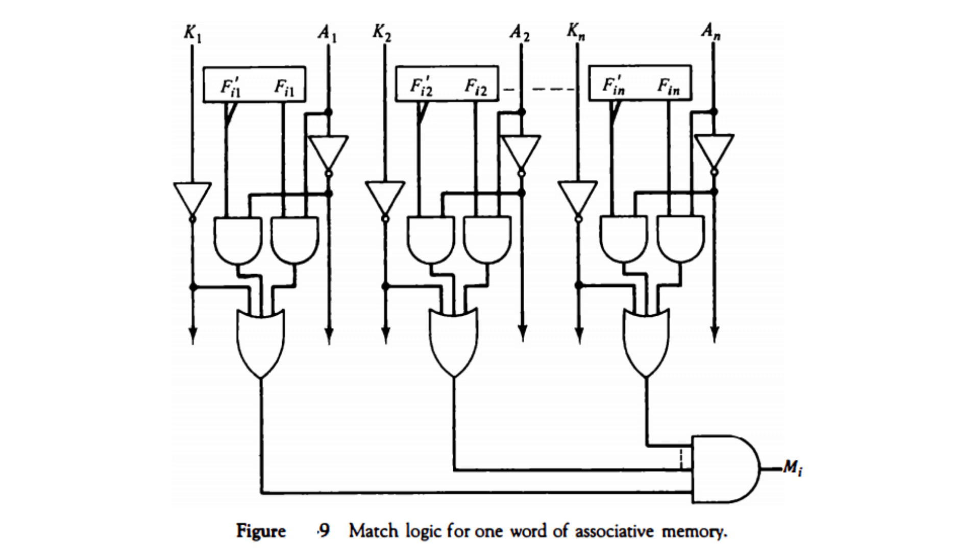The AND gate then combines this with the key register bit. If the key register bit is 1, meaning we're considering this bit, and the XOR gate output is 0, meaning the bits match, then the output of the AND gate is 1.